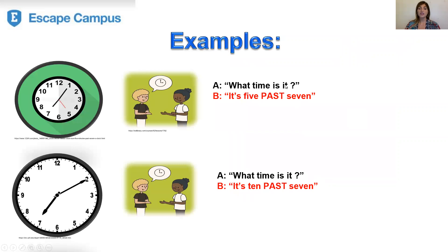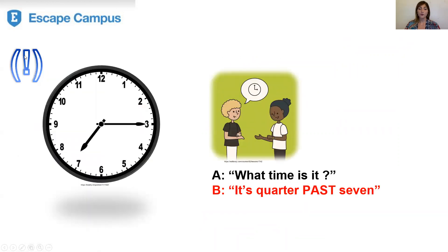'What time is it?' 'It's five past seven.' 'What time is it?' 'It's ten past seven.' We said first the minutes — five and ten — then we use past, and then the hour — seven. Be careful: 'What time is it?' 'It's quarter past seven,' or '15 minutes past seven.'